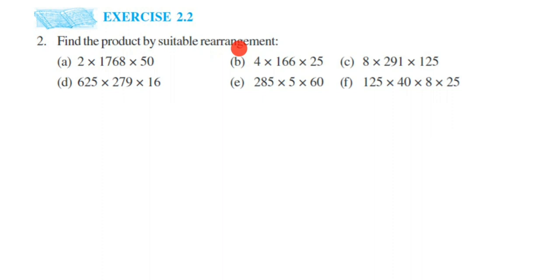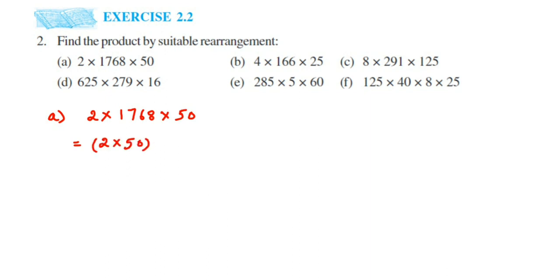Let's start with the first question. In part (a) we have 2 × 1768 × 50. Now we know that 2 × 5 = 10, so 2 × 50 will be 100. So I'm going to rearrange this as (2 × 50) × 1768, which gives us 100 × 1768.